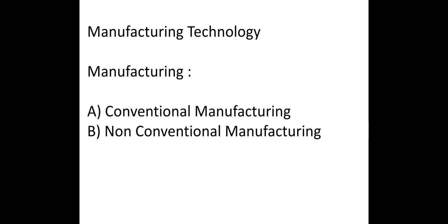The basic difference between them: in conventional machining process, the tool is directly in contact with the workpiece, and the cutting tool is always harder than the workpiece. In non-conventional machining process, there is no contact between the tool and workpiece, and material removal occurs with or without chip formation.